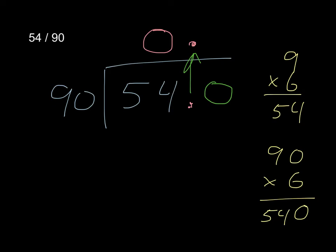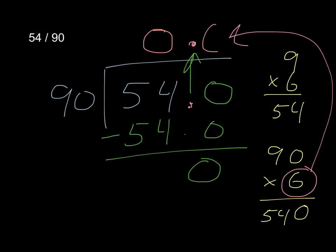That works. So I'm going to write my 540 and subtract it, which is 0. So the number that moves up is my 6, and it is 6 tenths.